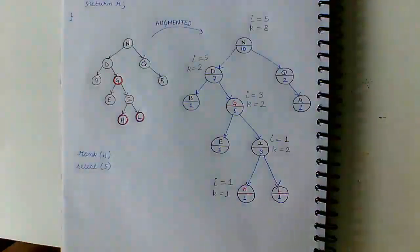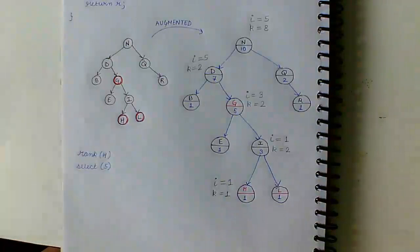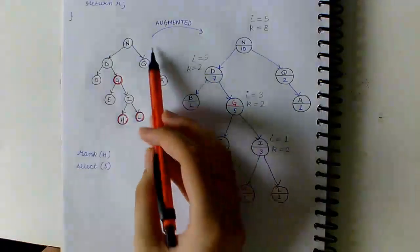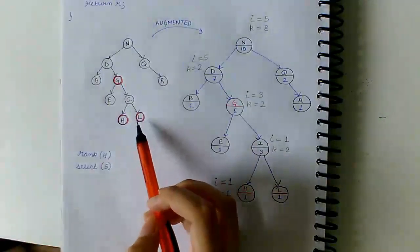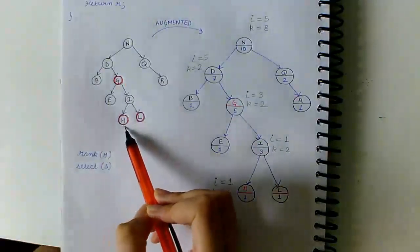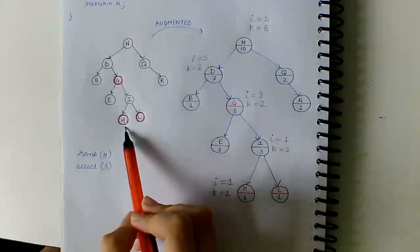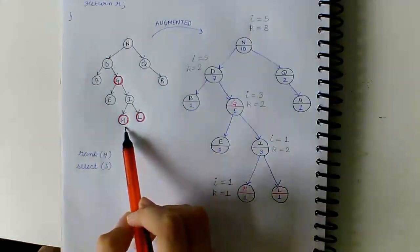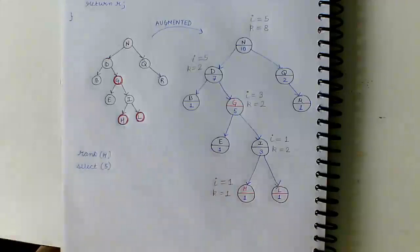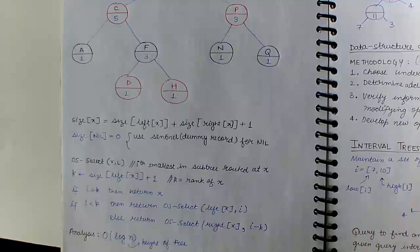Hello everyone. We are going to solve a question on augmented trees. The question is: augment the given red-black tree, determine the rank of key h, and also find the fifth smallest element using suitable algorithms. As we know about order statistics trees, we are going to augment red-black trees in this way.